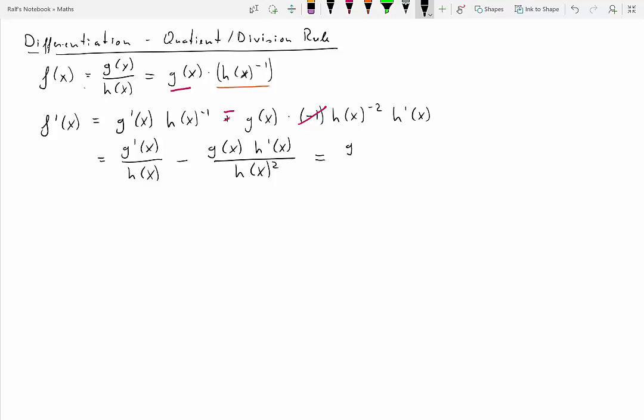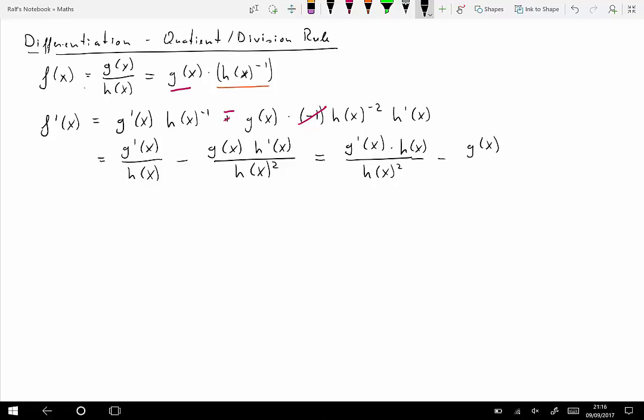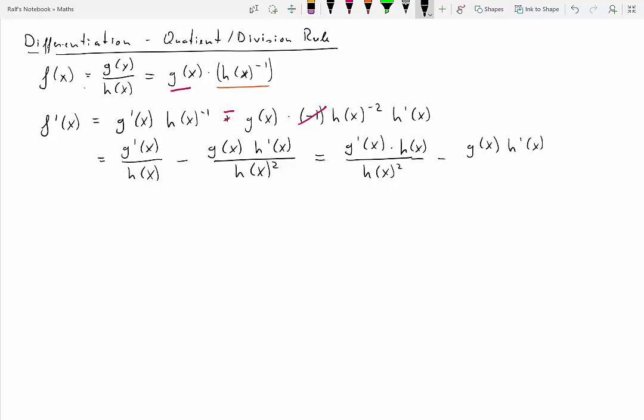So we have two summands but with different denominators. So let's bring the denominators onto level terms. To do that, we'll have to multiply the numerator and denominator of the left-hand summand by h of x. So we have g prime of x times h of x divided by h of x squared. And the second term will remain unchanged.